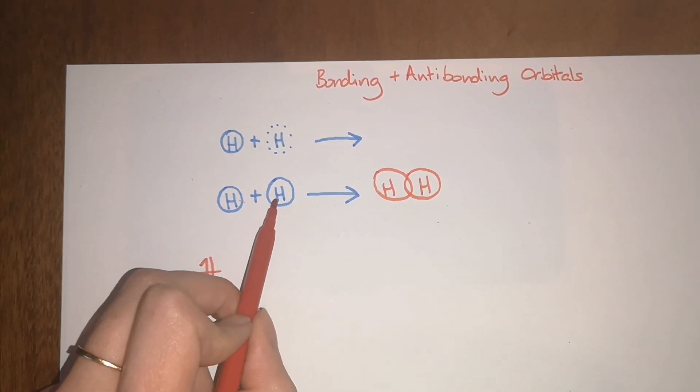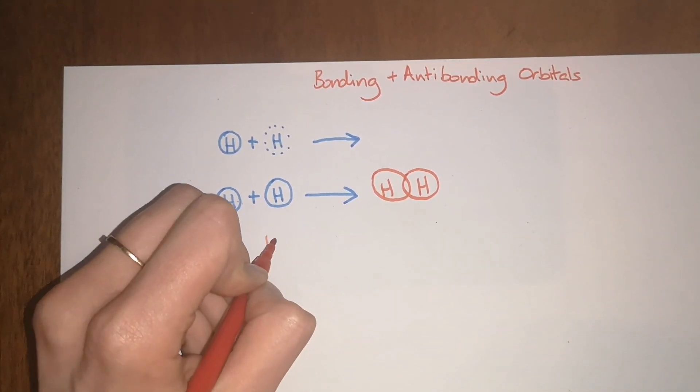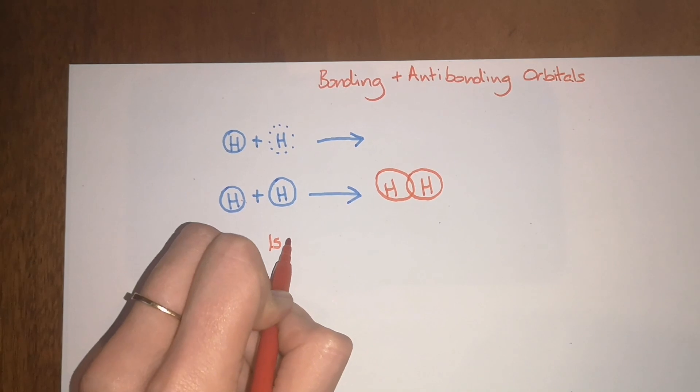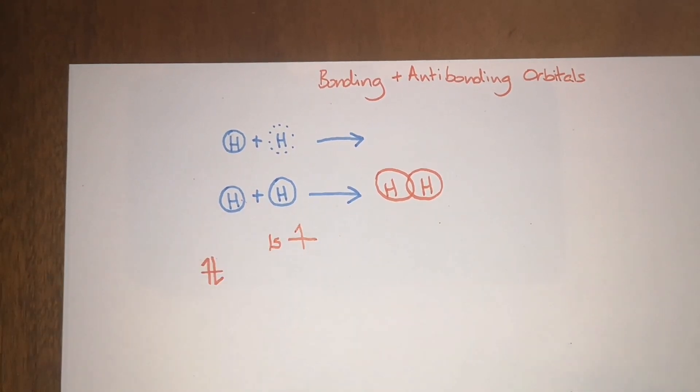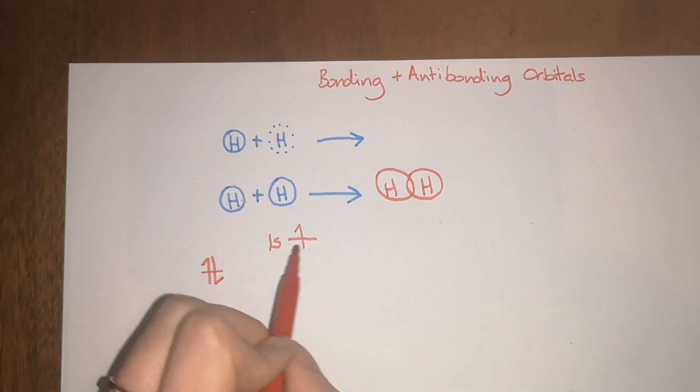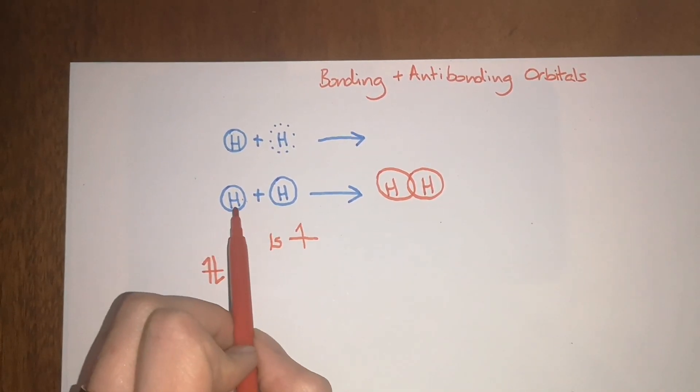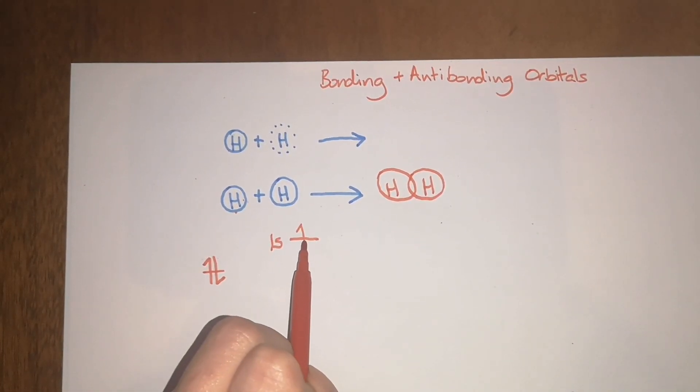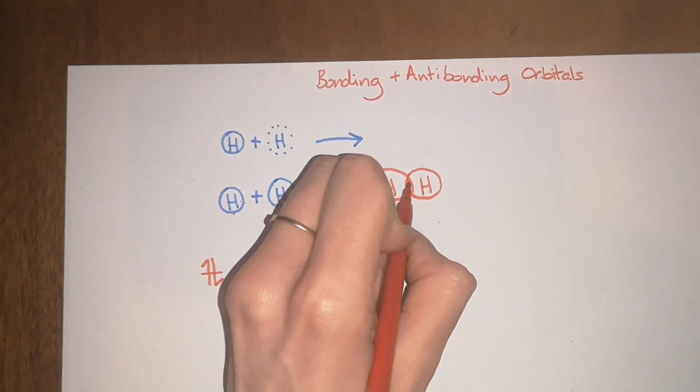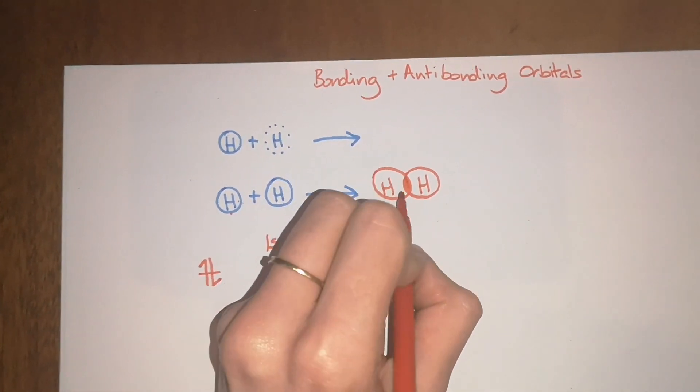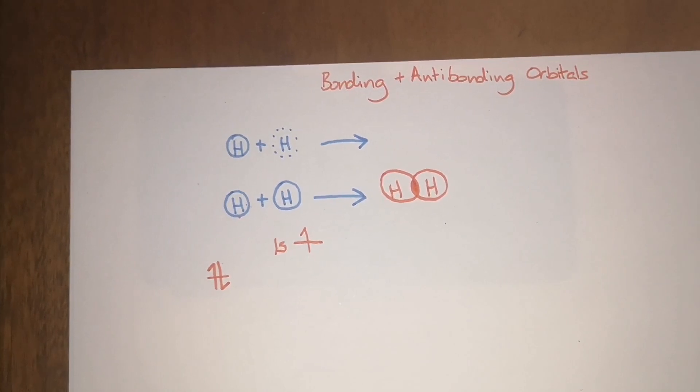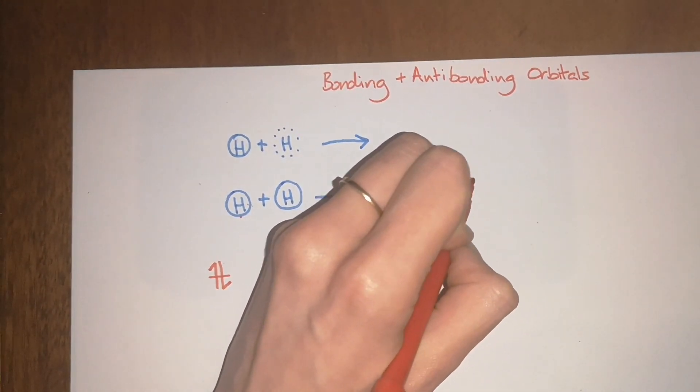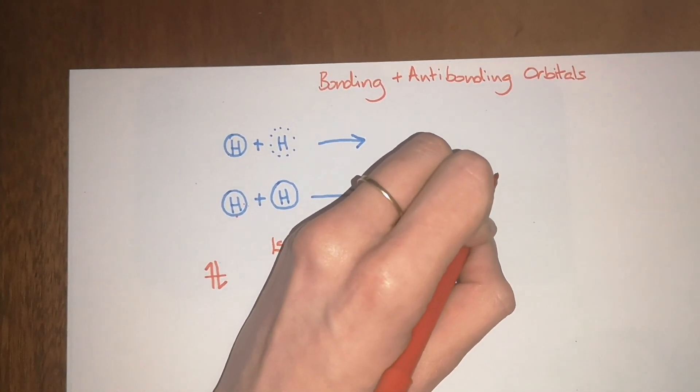They both donate one electron. If you remember what a 1s orbital for a proton looks like, it has one electron because it's the first atom on the periodic table. Both hydrogens donate a single electron, so both of the electrons live in the space in between the two hydrogen atoms. This is referred to as the bonding orbital.